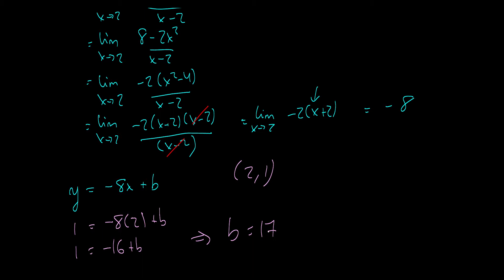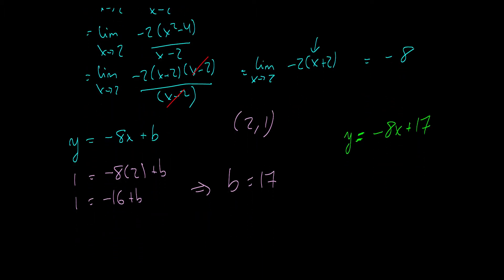I'm doing this algebra pretty quickly, but you should be checking your answers with these videos rather than learning this from scratch, since this is limit review. The equation of the tangent line is y = −8x + 17. If you didn't get that correct, you might want to check out one of the previous videos on tangent lines.